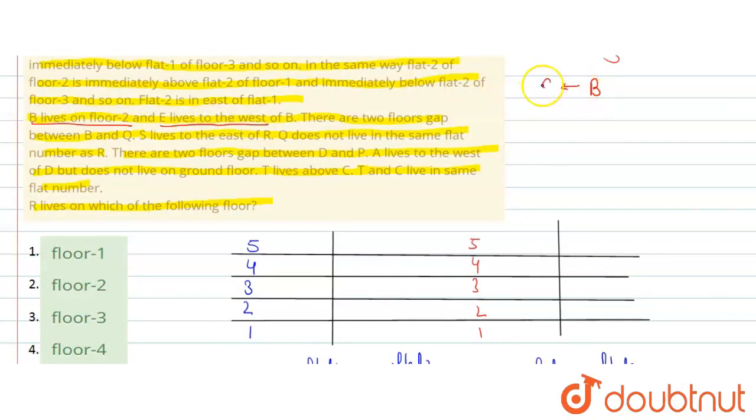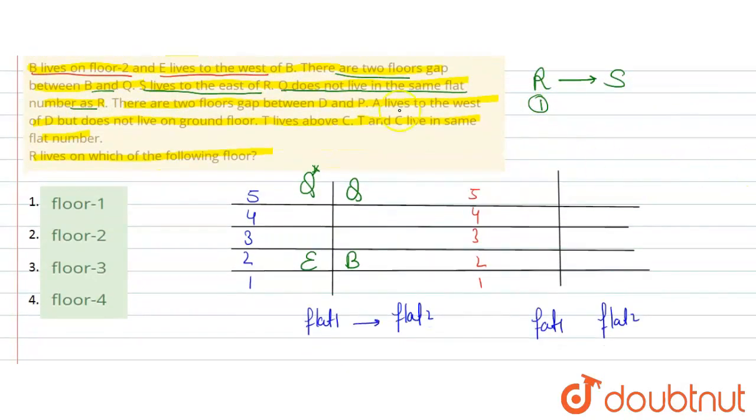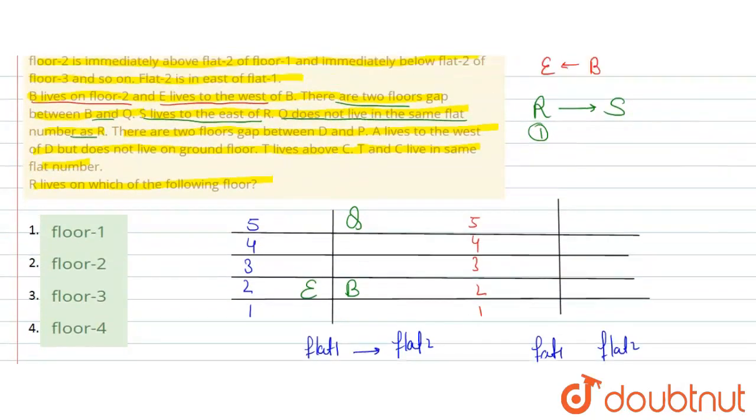And E is west of B. That means E will come in the west of B, so it will be like this. So, B will come in my flat 2. So, here we have B and here we have E. Then next given is there are two floors gap between B and Q. So, Q can come here or Q can also come here. Then given is S lives east of R. That means S will come in the east of R. Then given is Q does not live in the same flat number as R. That means R will come in flat 1.